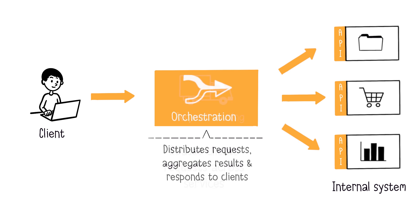The API Gateway also plays a role in orchestrating services. If processing a request requires calls to multiple APIs, the client sends a single request to the API Gateway. The API Gateway then distributes the requests among the different services, aggregates the results, and sends them back to the client.